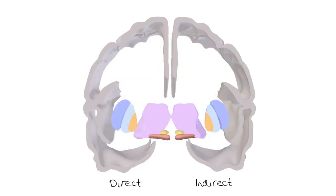G'day and welcome to another video on the basal ganglia. Today we're going to be talking about the direct and indirect pathways, models used to describe the influence of the basal ganglia on conscious movement.